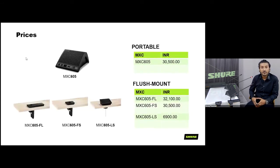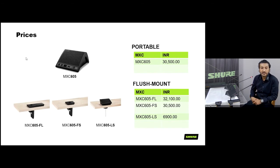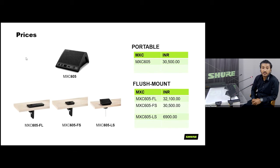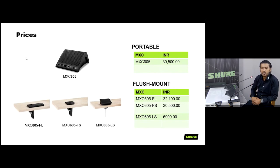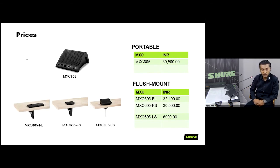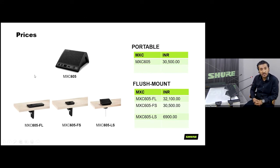Many people will want to know the pricing. This is the indicative pricing for all the MXC605 form factors: the portable unit, flush mount long, flush mount short, and the loudspeaker unit. For those familiar with DDS family pricing, it is not very different — at the actual deal level it barely differs from the DDS product, making it still very attractive and presentable as an entry-level product.